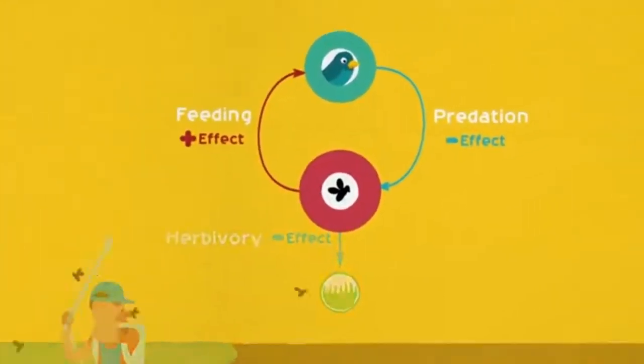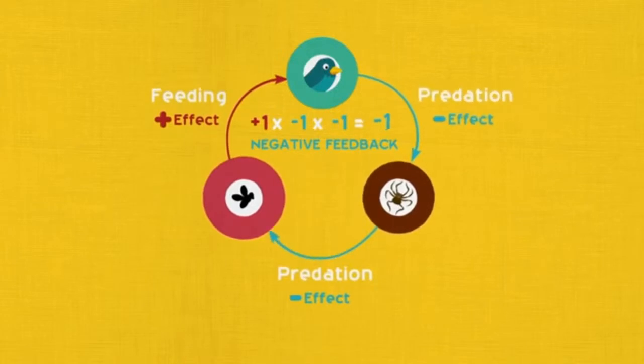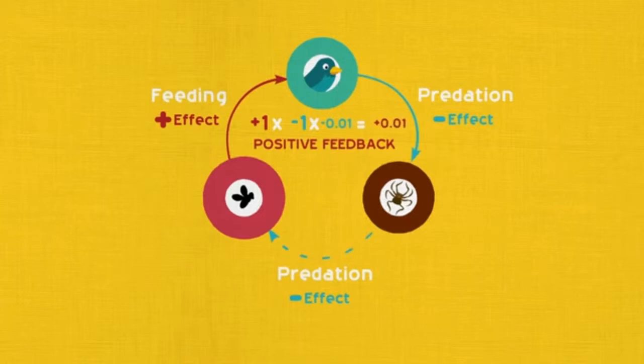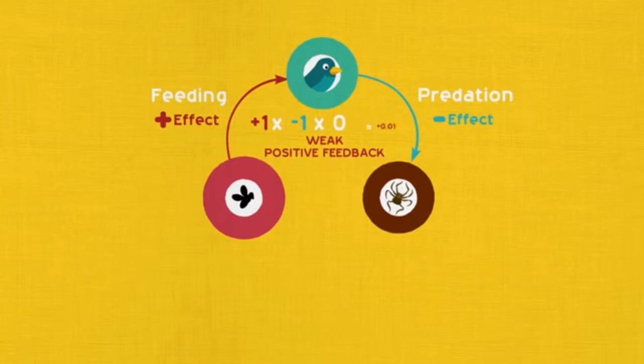Note that each feedback is the product of the links in the loop. Add one negative link and it will reverse the feedback force entirely. One weak link will reduce the effect of the entire feedback considerably. Lose a link and the whole loop is broken.